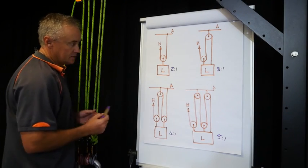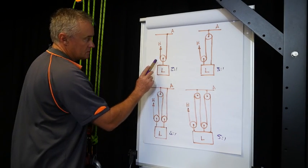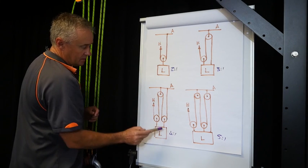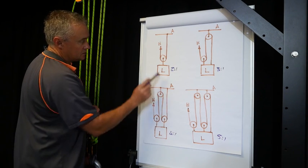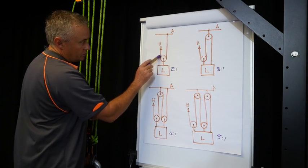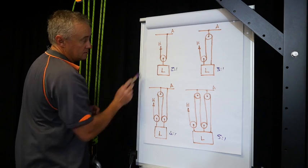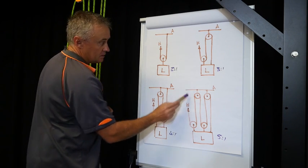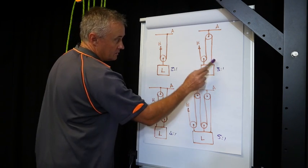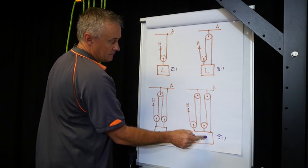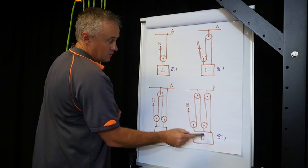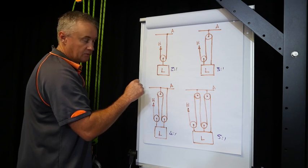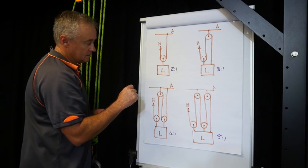So if we look closely at these four systems, the systems with the even mechanical advantage have the rope terminated at the anchor. The systems with the odd mechanical advantage have the rope terminated on the load. So we use this as a checker when we've done our mechanical advantage calculation.